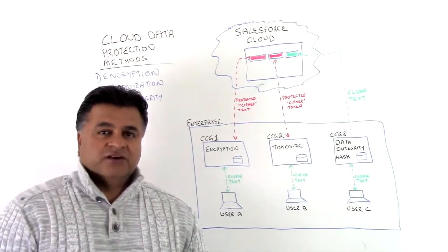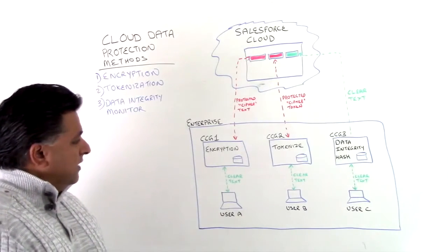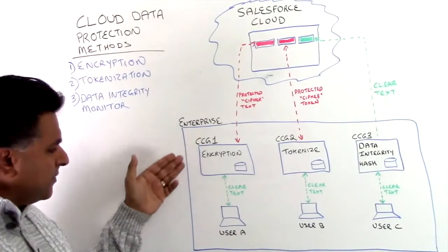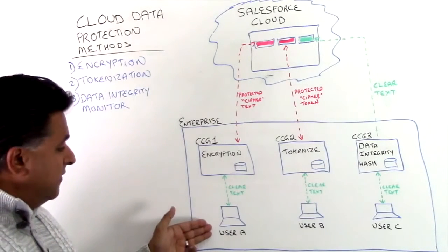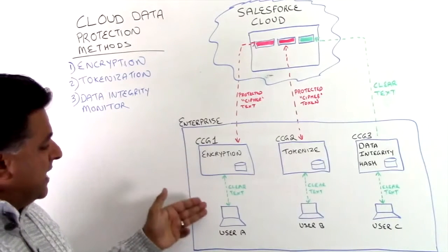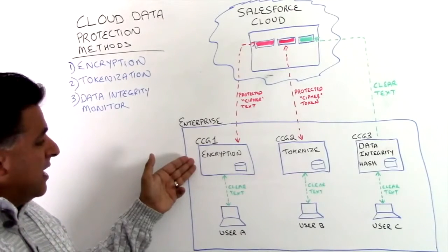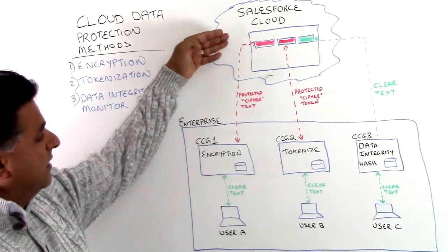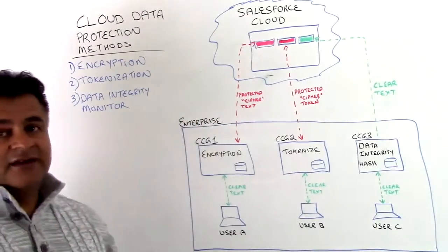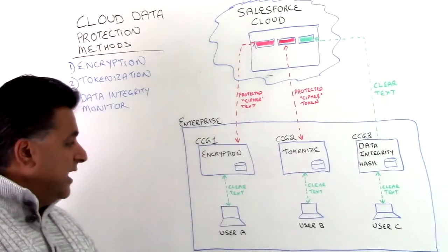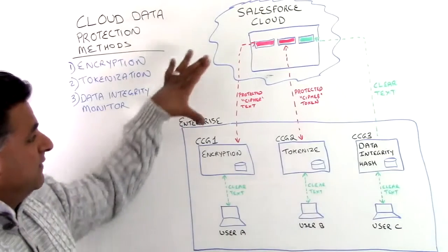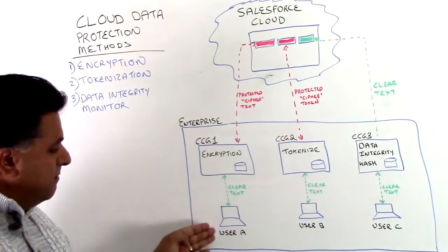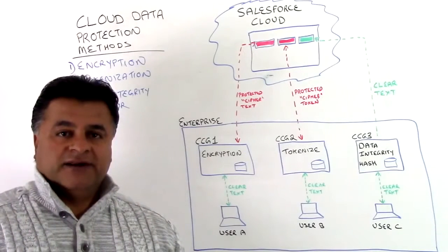Let's touch upon the first one, which is encryption. Here is an example of an enterprise with one of our Cypher Cloud security gateways deployed in their infrastructure. User A is going to enter data into Salesforce. As they enter that data, it passes through our Cypher Cloud gateway and becomes encrypted. What is put into the Salesforce Cloud is an encrypted version — what we call protected Cipher Text. When User A wants to view that data, we decrypt the information and send it in clear text back to them so they can go about their daily activity.